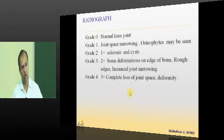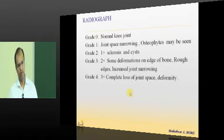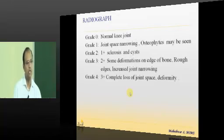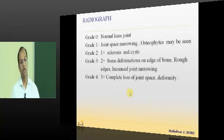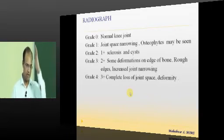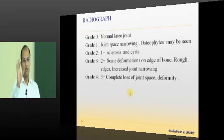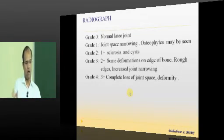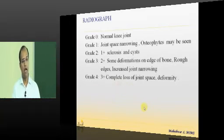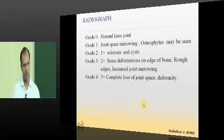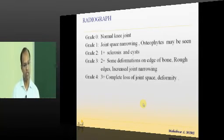On examination, assess normal range of motion, synovial thickening, and medial joint line tenderness. For the knee joint, examine the anatomical and mechanical axes. Radiographs should be taken in a standing, weight-bearing position to accurately assess what is going wrong with the joint.